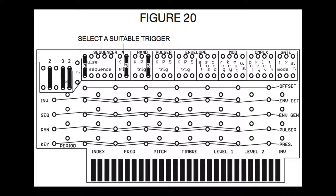Also, from reading the text, there are two resistors missing — one going from the random row to pitch of the complex oscillator, and one going from the sequencer row to pitch of the complex oscillator.